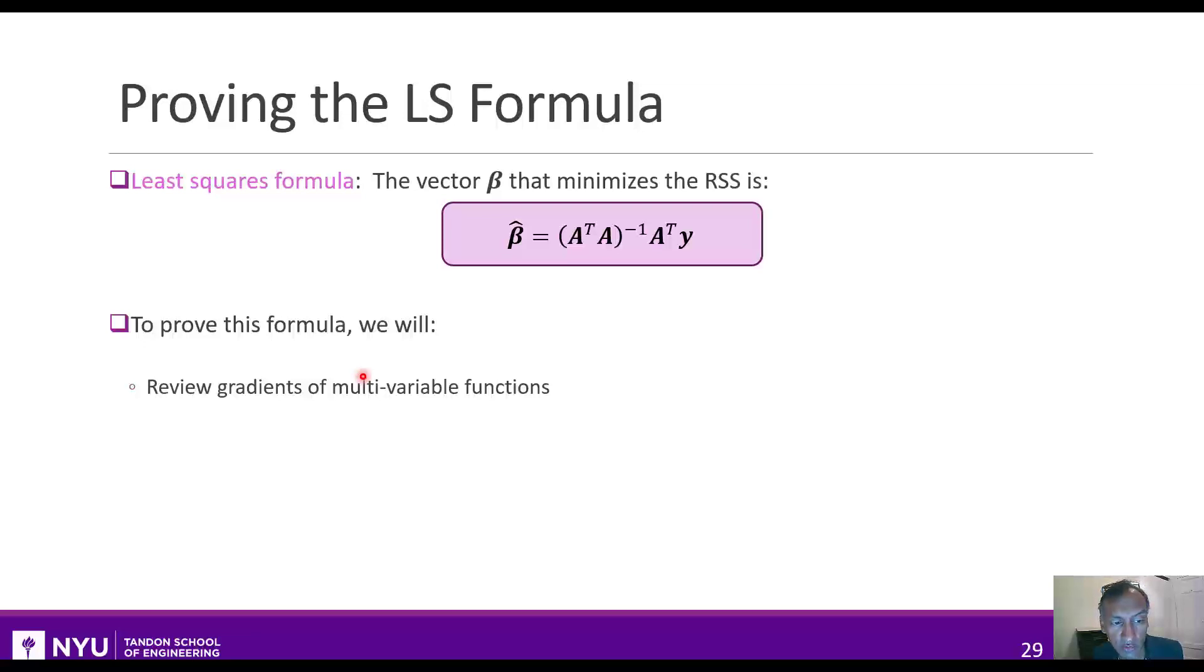And one thing we're going to show here is that what we want to do when you minimize a function is to set the gradient to zero. To that end, we're going to compute the gradient of the RSS and then solve for the beta where the gradient is zero.